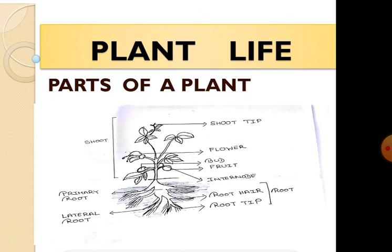Now, the overall structure of most plants consists of two parts. One is the shoot and another is the root. The shoot means the part which is above the soil and the root is the part which is below the ground.